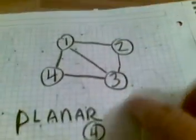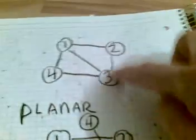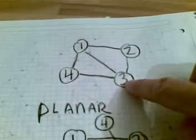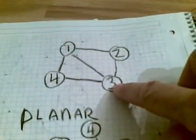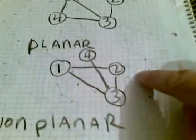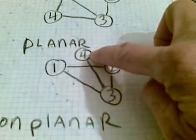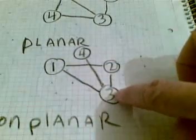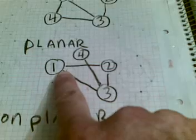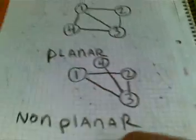Planar is really simple: with vertices one and three, the line connects them — it's planar, there are no lines that have to cross another edge. This graph here is non-planar because between vertices four and three, this edge has to pass by the edge between vertices one and two. That one's non-planar.